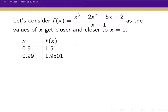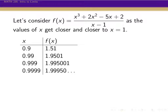If we get closer — 0.99 — then we get the function value is 1.9501. If we get even closer and plug in 0.999, then we see the value of the function is 1.995001. And if we get even a little bit closer — 0.9999 — now we're at 1.999500... And so as we get closer and closer to 1 in our x values, it looks like our function is getting closer and closer to 2.